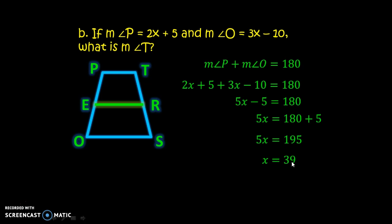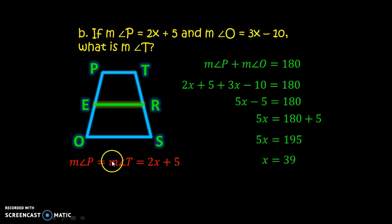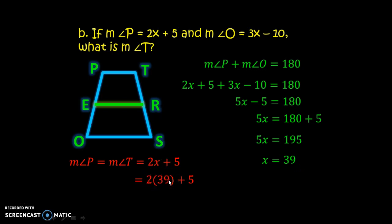We can now compute the measure of angle P. Since angle P is congruent to the corresponding base angle, the measure of angle P equals 2x plus 5. Substituting x equals 39: 2 times 39 is 78, plus 5 gives 83 degrees. Therefore, the measure of angle P is 83 degrees.